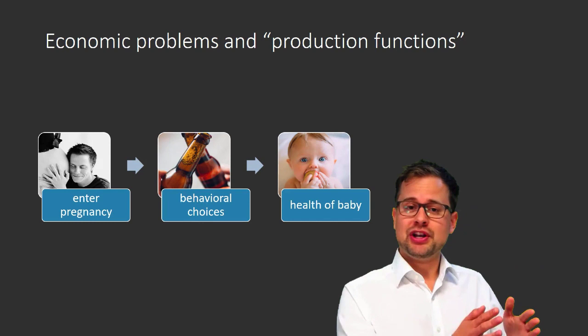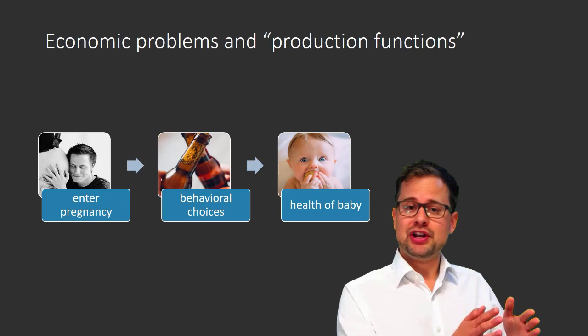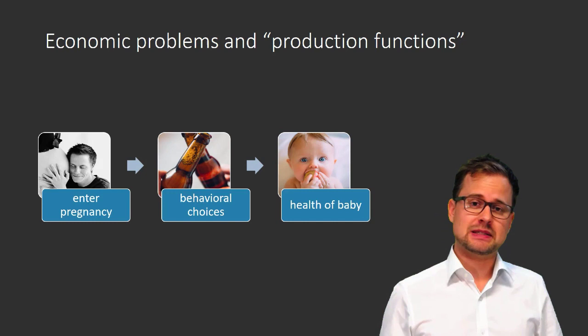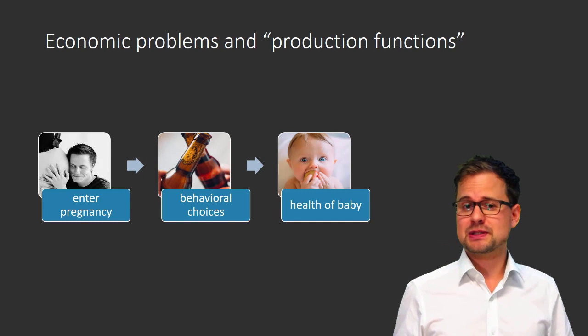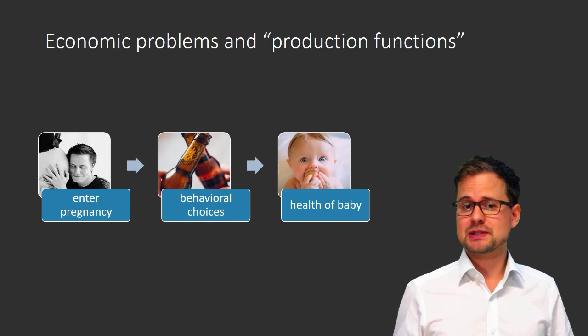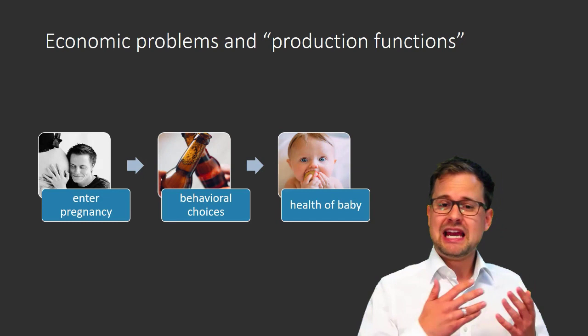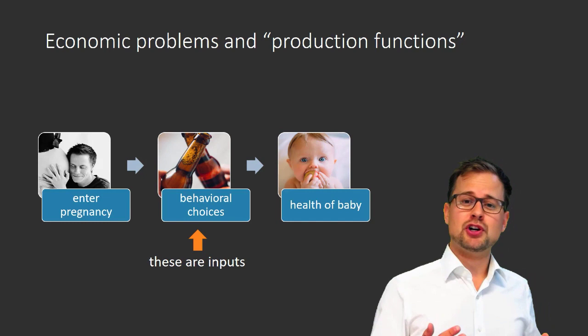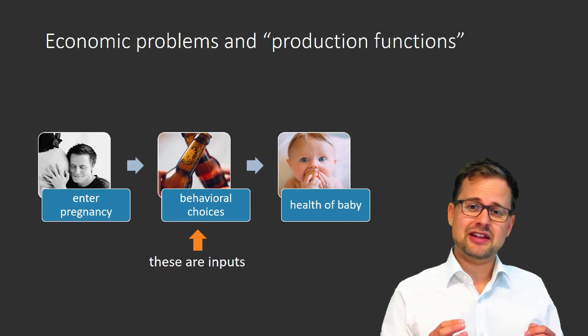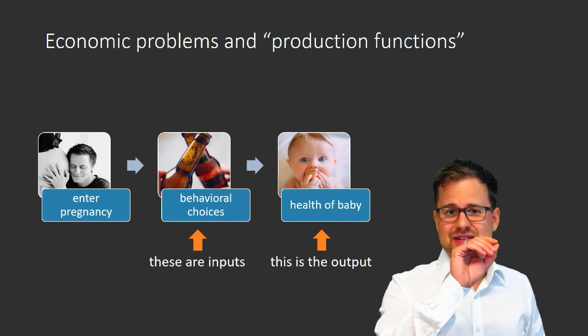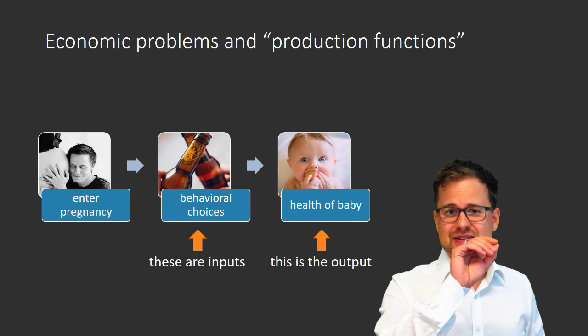How would you go about describing and investigating this relationship? Here's one way to think about it. At some point, a woman enters her pregnancy and the baby will be in her tummy for nine months. During that time, she gets to decide how much she drinks and how much she smokes. Then the baby is born and we observe whether it is a healthy baby or a less healthy baby. The behaviors the woman chooses are the inputs — for example, how many cigarettes she smoked. The health of the baby is the output. The arrow between behaviors and the baby is our transformation process.